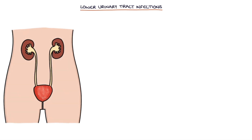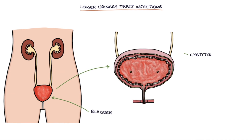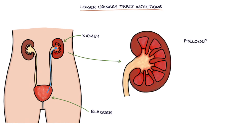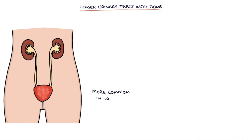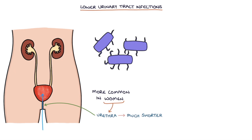Lower urinary tract infections, or UTIs, involve infection in the bladder causing cystitis, which is inflammation of the bladder. They can spread up to the kidneys and cause pyelonephritis, which is inflammation and infection in the kidney. Urinary tract infections are far more common in women, where the urethra is much shorter, making it easier for bacteria to get into the bladder.